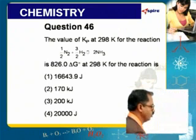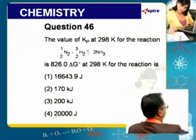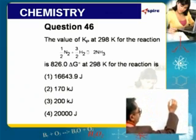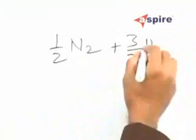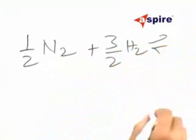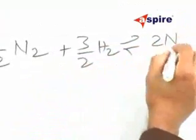Now, in this problem, you are given an equilibrium reaction, namely, half N2 plus 3 by 2 H2 equilibrium 2 NH3.